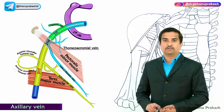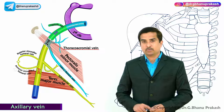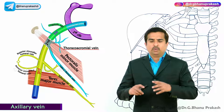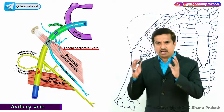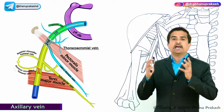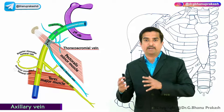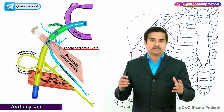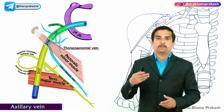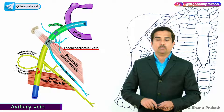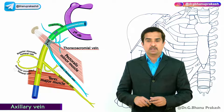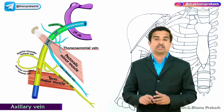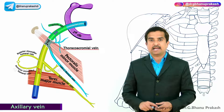An important point to note is that there is no axillary sheath — or only a very thin axillary sheath — around the axillary vein, compared to the artery. This allows the vein to freely expand during increased venous return from the upper limb towards the heart via the subclavian vein.